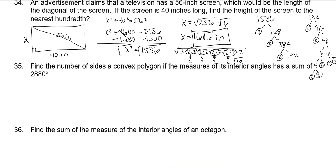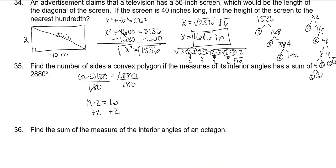Find the number of sides of a convex polygon whose interior angles sum to 2880. The formula is (n minus 2) times 180. Set equal to 2880 and divide both sides by 180: 2880 divided by 180 is 16. Add 2 to both sides, and n is 18—so it's an 18-gon.